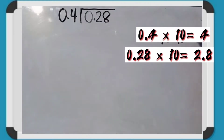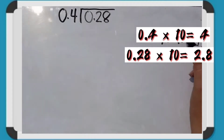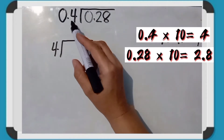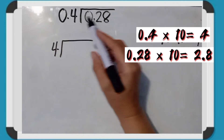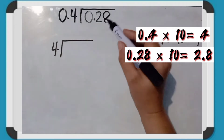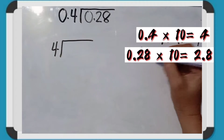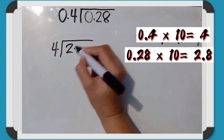4 tenths is multiplied by 10 to become the whole number 4. Next, since we multiplied the divisor by 10 to make it a whole number, we also multiply the dividend by 10. So, 28 hundredths times 10, the answer is 2 and 8 tenths, or 2.8.